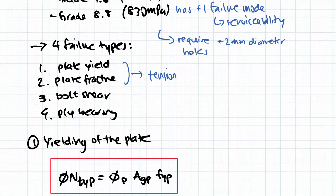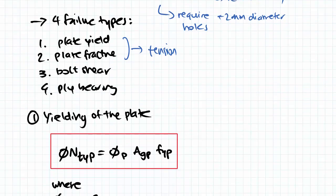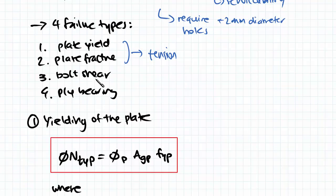So the first two failure modes, yielding and fracture, we've seen them before when we encounter that in the chapter on tension. The formulas are almost exactly identical. But we'll be concentrating a bit more on bolt shear and ply bearing when we're moving forward because they are completely new.